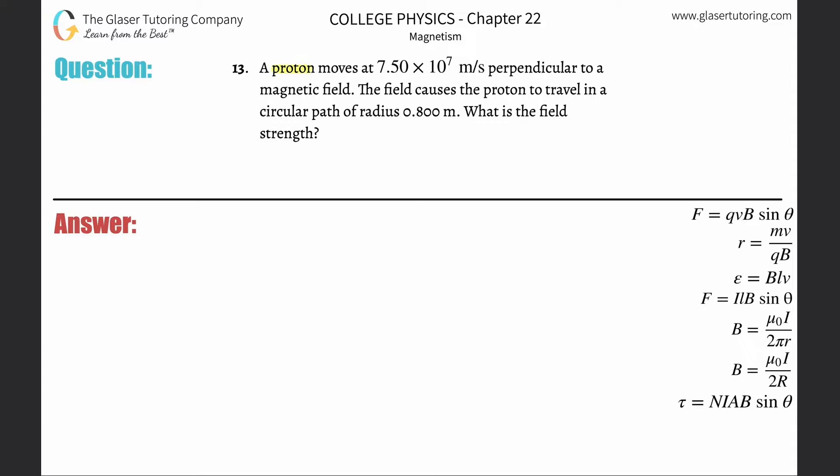Number 13, a proton moves at 7.5 times 10 to the 7 meters per second perpendicular to a magnetic field. The field causes the proton to travel in a circular path of radius 0.8 meters. What is the field strength?